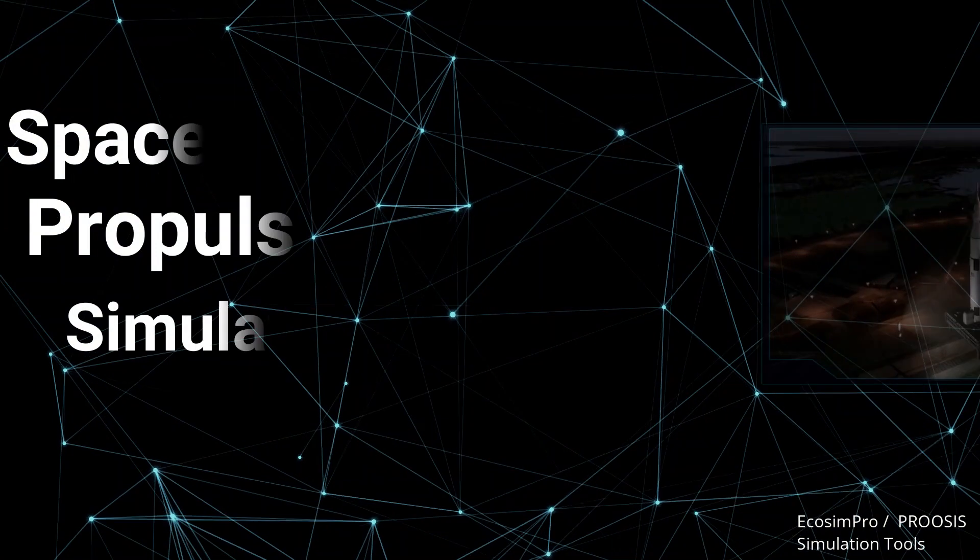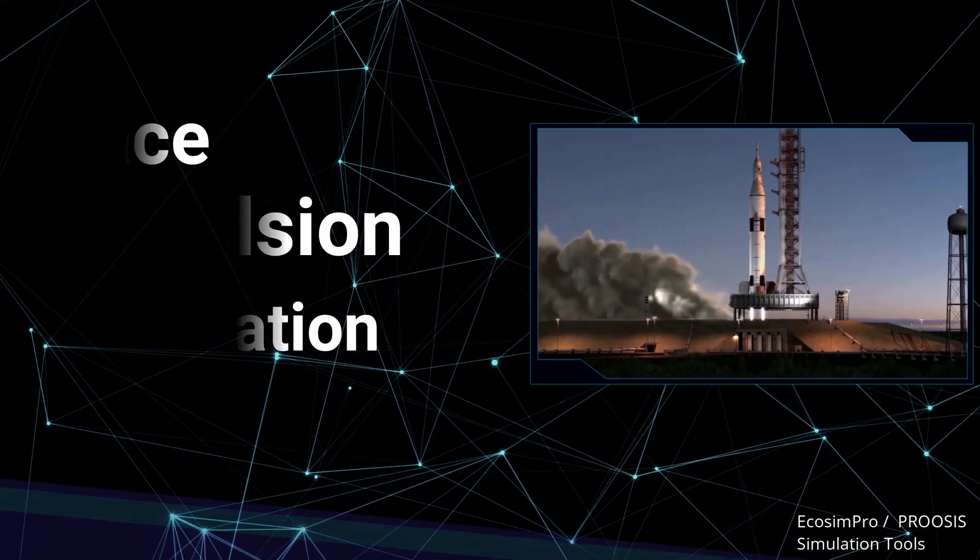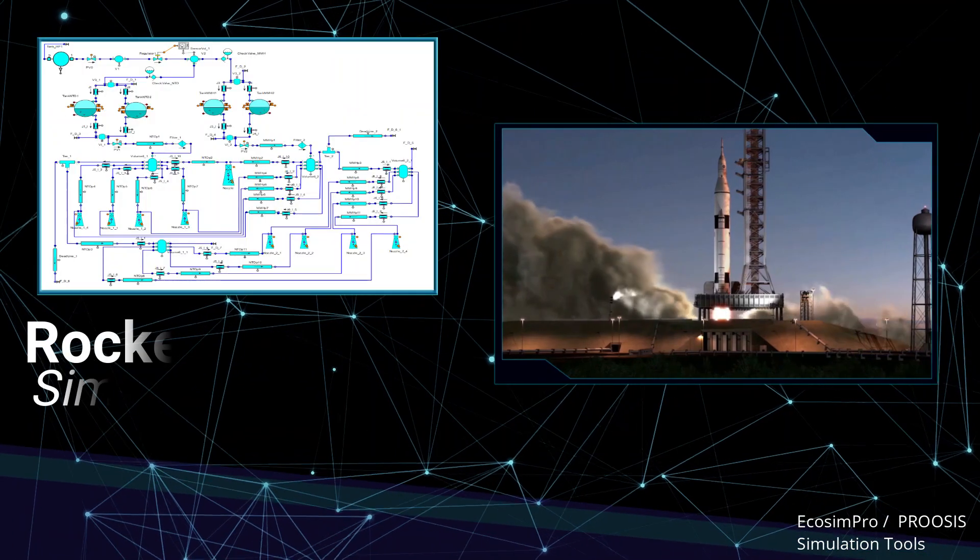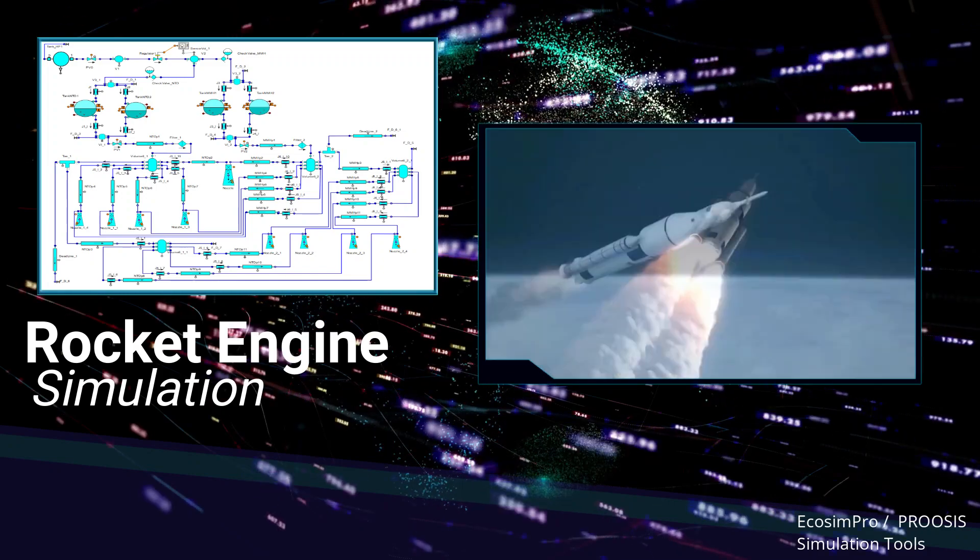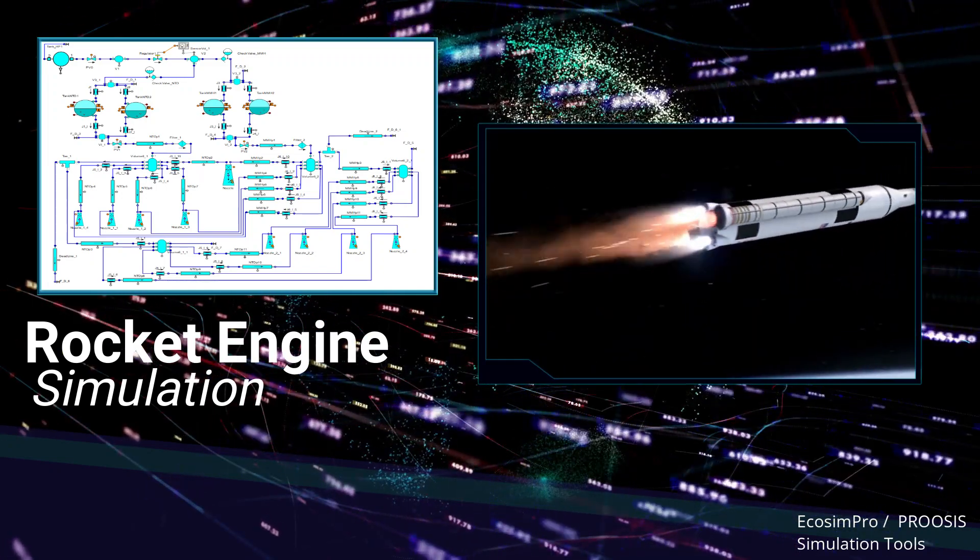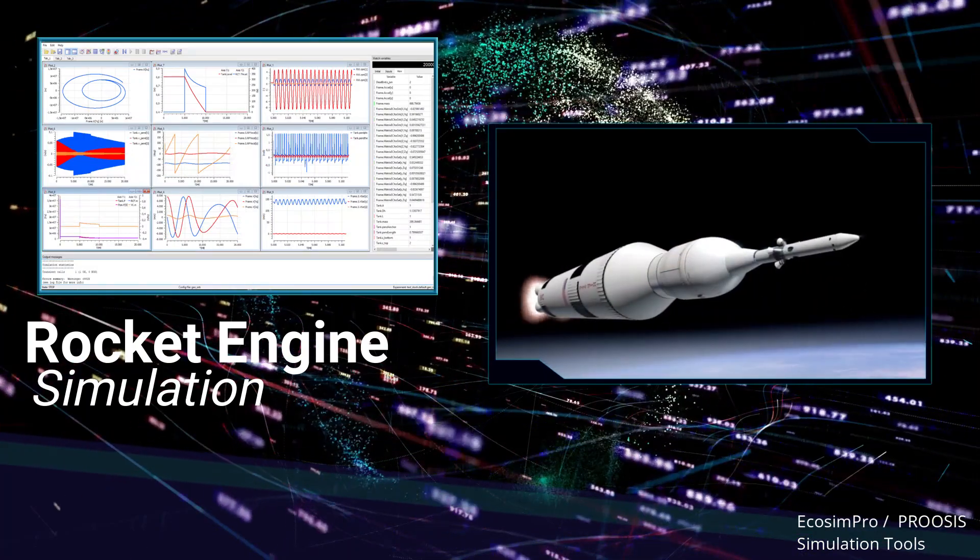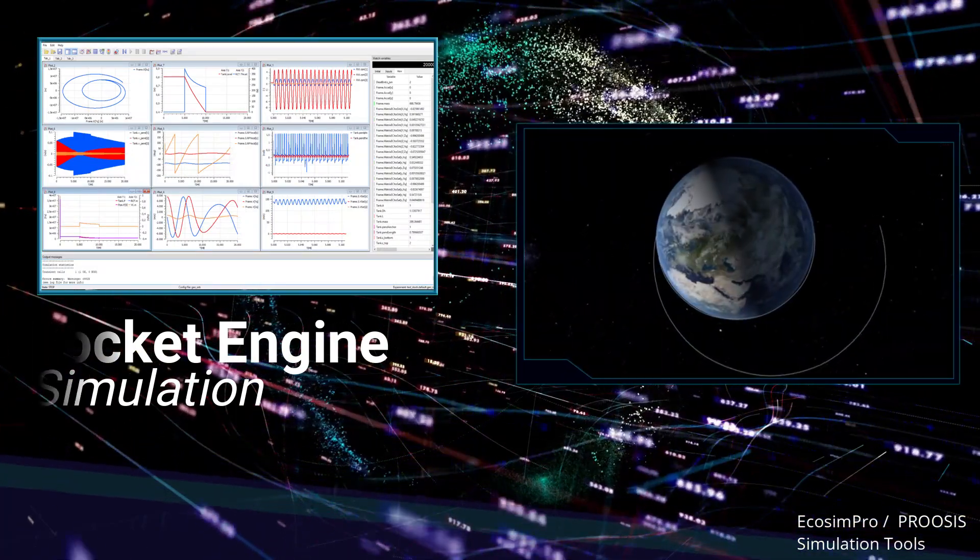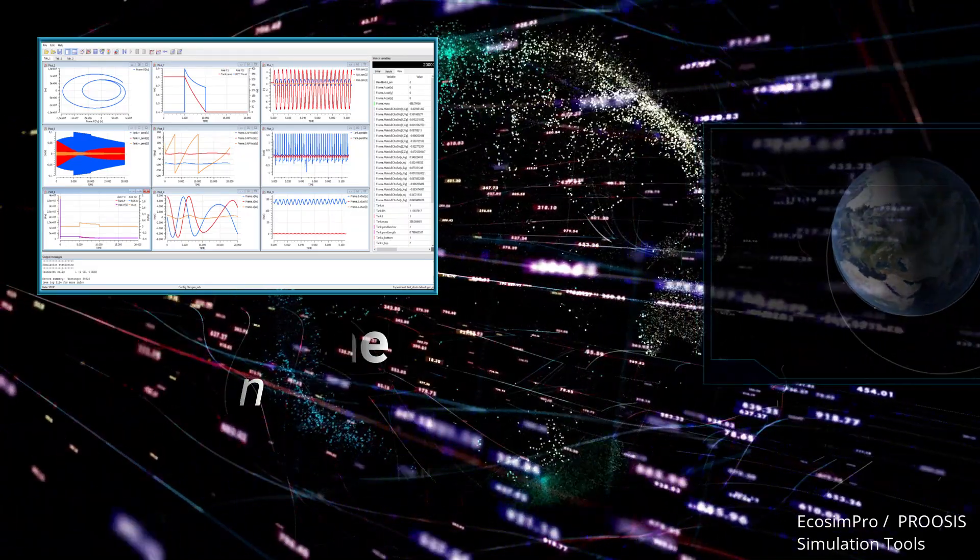Ecosim Pro also has several professional toolkits for 0D and 1D modeling and simulation of space propulsion systems. These toolkits are now being used by cutting-edge companies to develop advanced projects for spacecraft, satellites, and rockets. Some of them have even become the official toolkits of the European Space Agency.